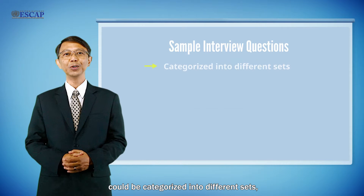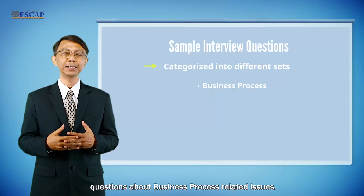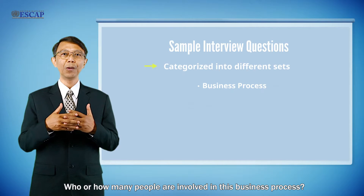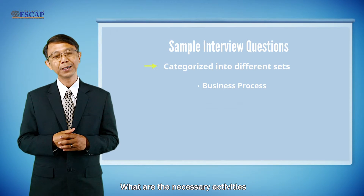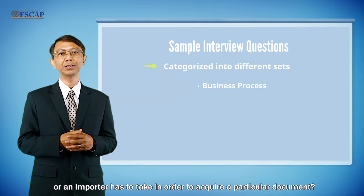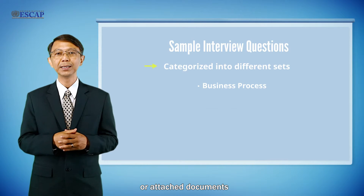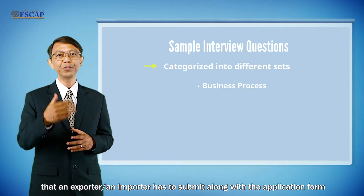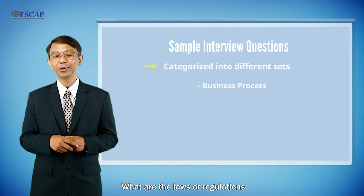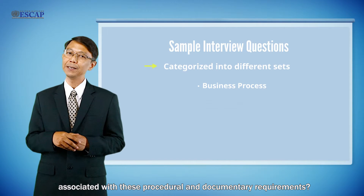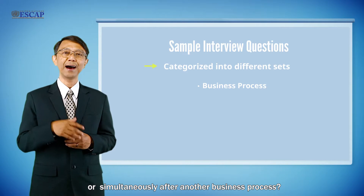The interview questions could be categorized into different types, such as questions about business process related issues. For example: who or how many people are involved in this business process; what are the necessary activities that an exporter or importer has to take in order to acquire a particular document; what are the supplementary or attached documents that have to be submitted along with the application form; what are the laws or regulations associated with these procedural and documentary requirements; or which business processes can be carried out in parallel or simultaneously.